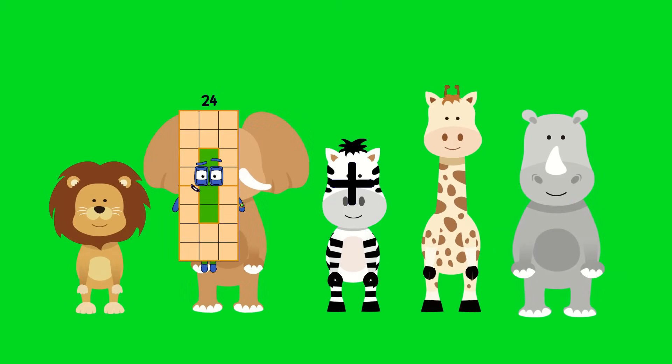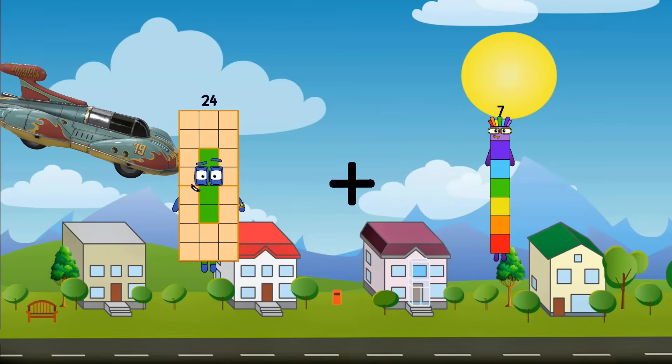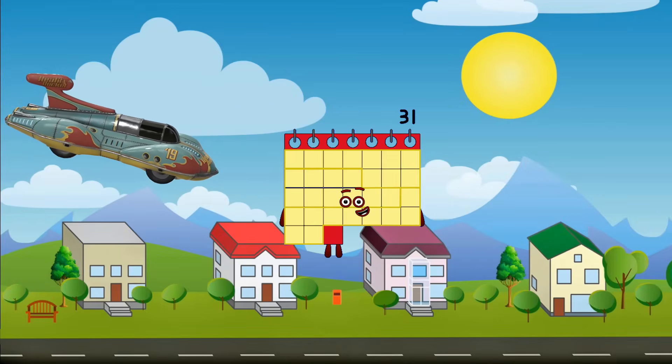Twenty-four plus seven equals thirty-one.